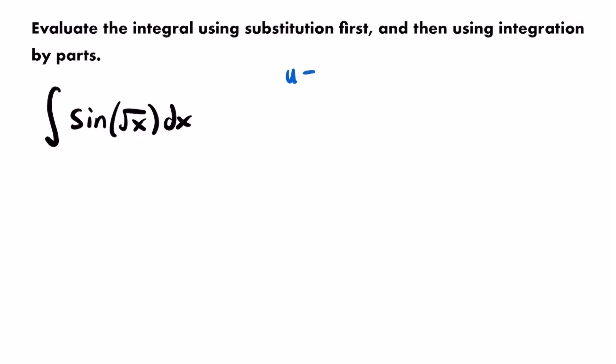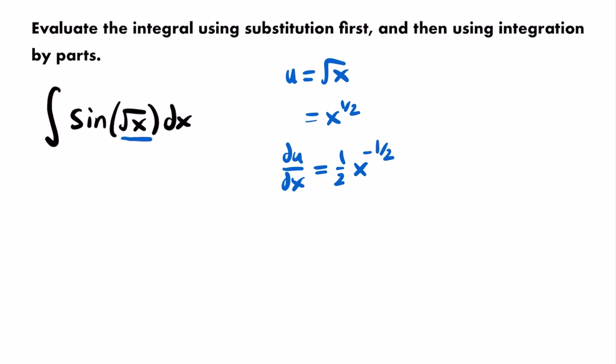I'm going to let u equal the inside function, the square root of x. The next step is to take the derivative of u with respect to x. First, I'll rewrite the square root of x as x to the 1/2 power, which makes it easier to apply the power rule. So du/dx equals 1/2 times x to the negative 1/2 power — we multiplied 1/2 down and subtracted 1 from the exponent, since 1/2 minus 1 is negative 1/2. Now, solving for du by multiplying both sides by dx, we get du = (1/2) x^(-1/2) dx.